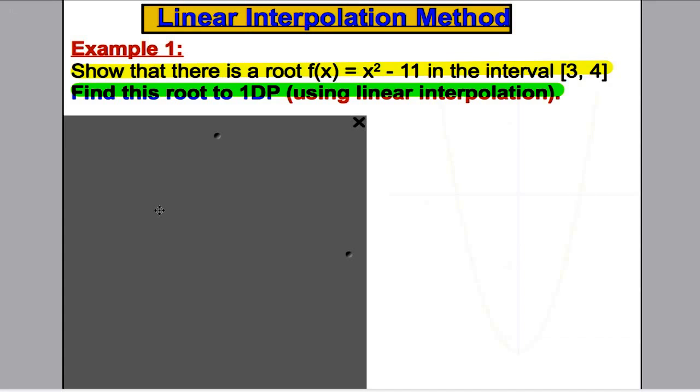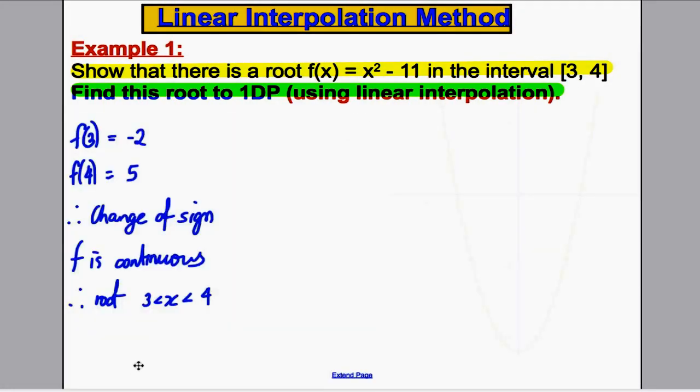Just take a second to show that there is a root between 3 and 4. We have done this in the previous video. And just revealing the answer there, we had done this before. You substitute 3 into the function, substitute 4, show there is a change of sign. As the function is continuous, there is a root between 3 and 4. We're done. Okay, now let's focus on the point of this video, finding this root to one decimal place using linear interpolation.